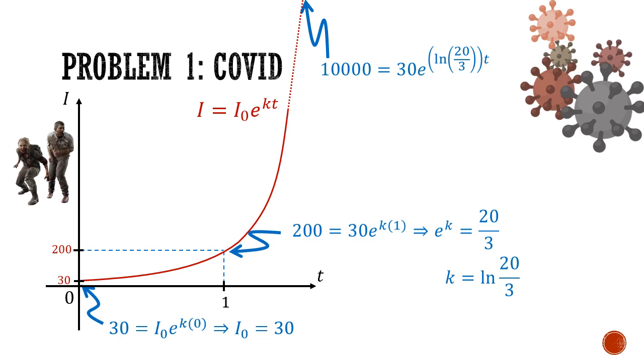And we're going to sub in i equals 10,000. So 10,000 will be equal to 30, the i0 multiplied by e to the power of the k, which we know as ln 20 over 3 multiplied by t. So we just need to find t. So first we can convert the exponential equation to a logarithmic equation and make t the subject. t will be 3.06. So approximately in 3 weeks, we will have 10,000 cases.